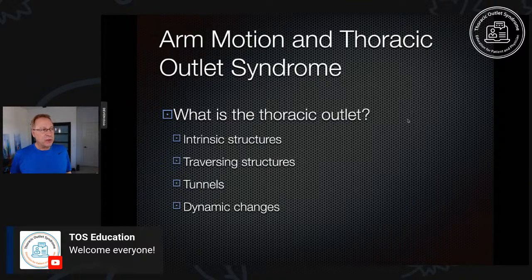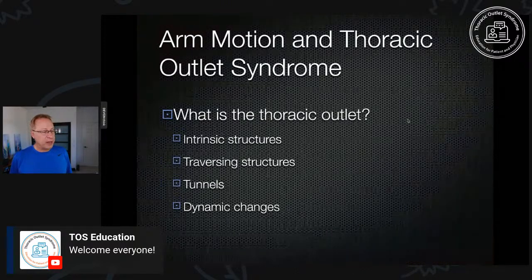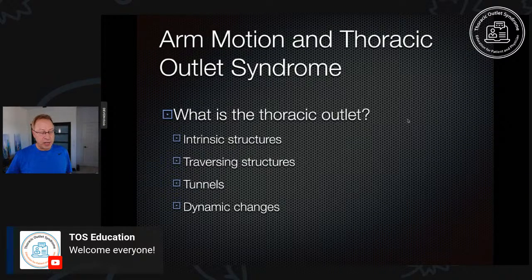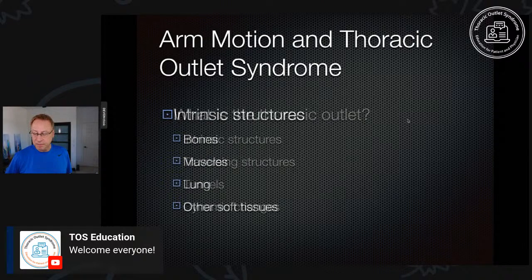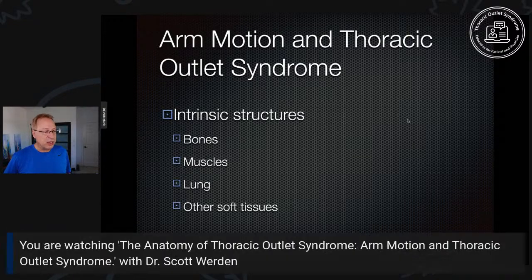When these structures cross the thoracic outlet and result in symptoms, you get thoracic outlet syndrome. We also have a series of at least three tunnels, as classically described by doctors. The scalene triangle is one. These tunnels result from the anatomy of the thoracic outlet and they change in different patients and with different arm positions. Finally, we'll talk about the dynamic changes — arm motion — that's the key point of this talk.